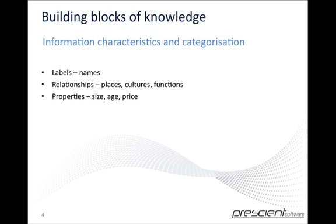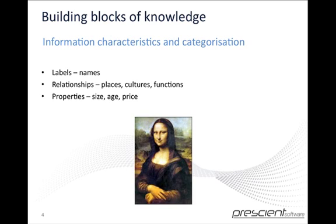So let's have a look at these in relation to an object so that we can see how it works more clearly. Here we have the Mona Lisa, a very famous painting. We know it as the Mona Lisa, which is its label or name. And we also know that it was painted by Leonardo da Vinci. Looking at Leonardo da Vinci, that's also a name and a label — it's the name of a person and the painter of the Mona Lisa. But because the object we're looking at is the Mona Lisa, in this particular case, Leonardo is a relationship.